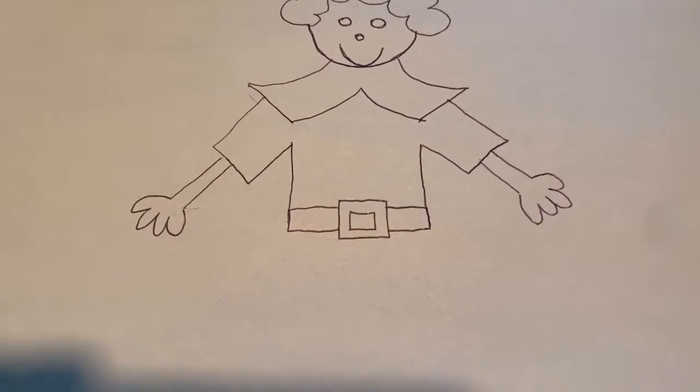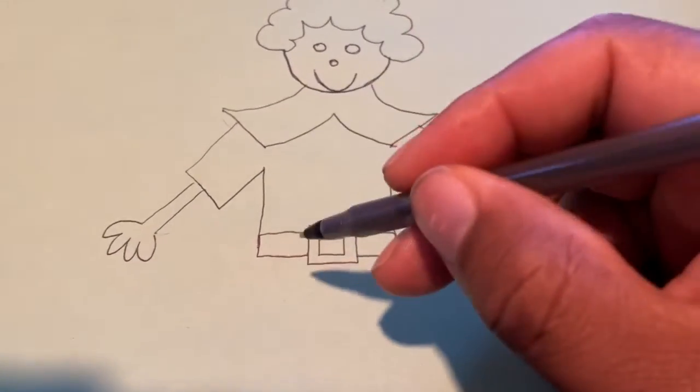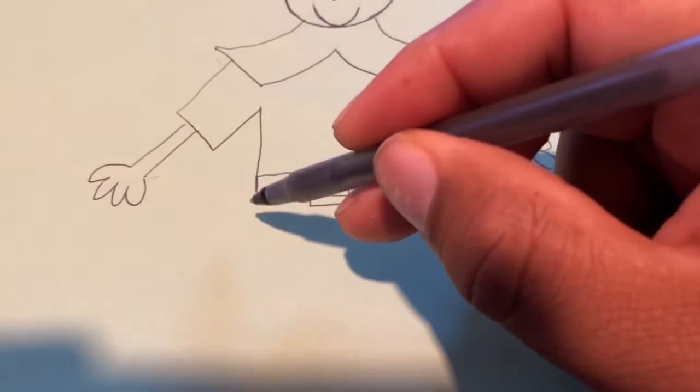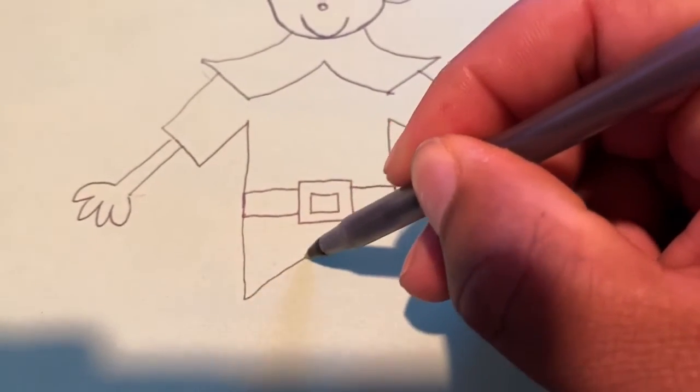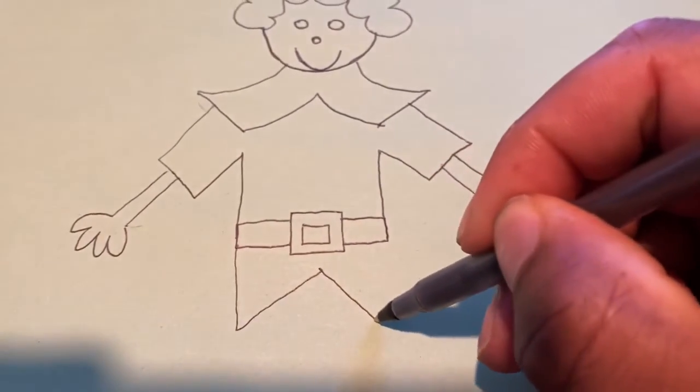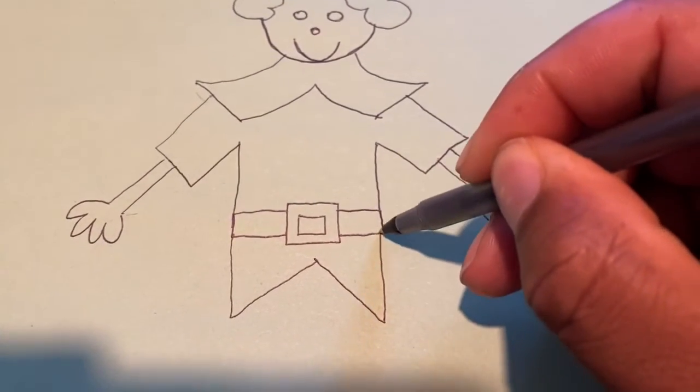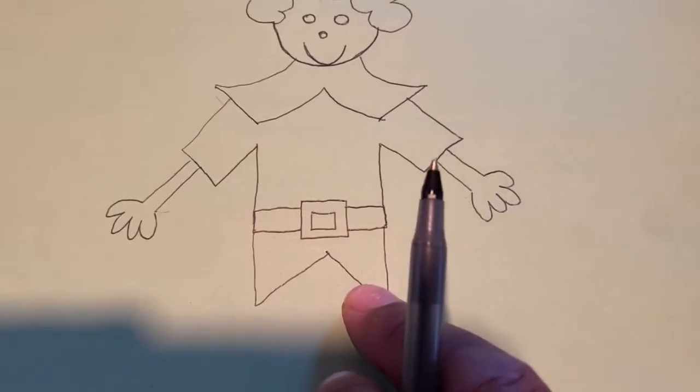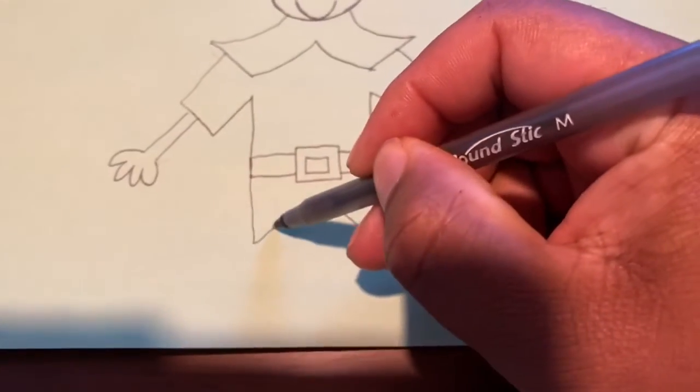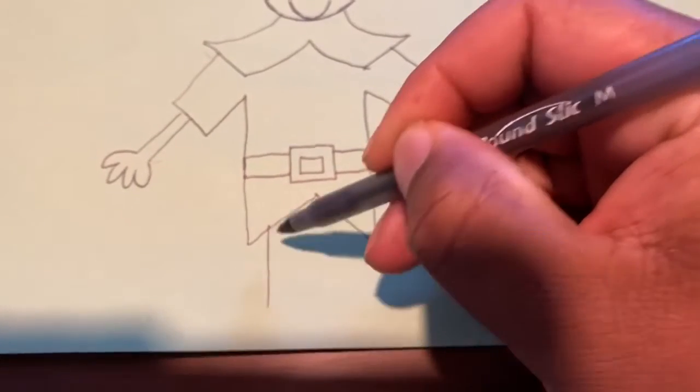Now it's time to draw les jambes. Les jambes. The legs. But before we do the legs, we have to do a large W shape. And that W shape is going to create the bottom to his elf top, his shirt. And then les jambes are just going to be straight lines.